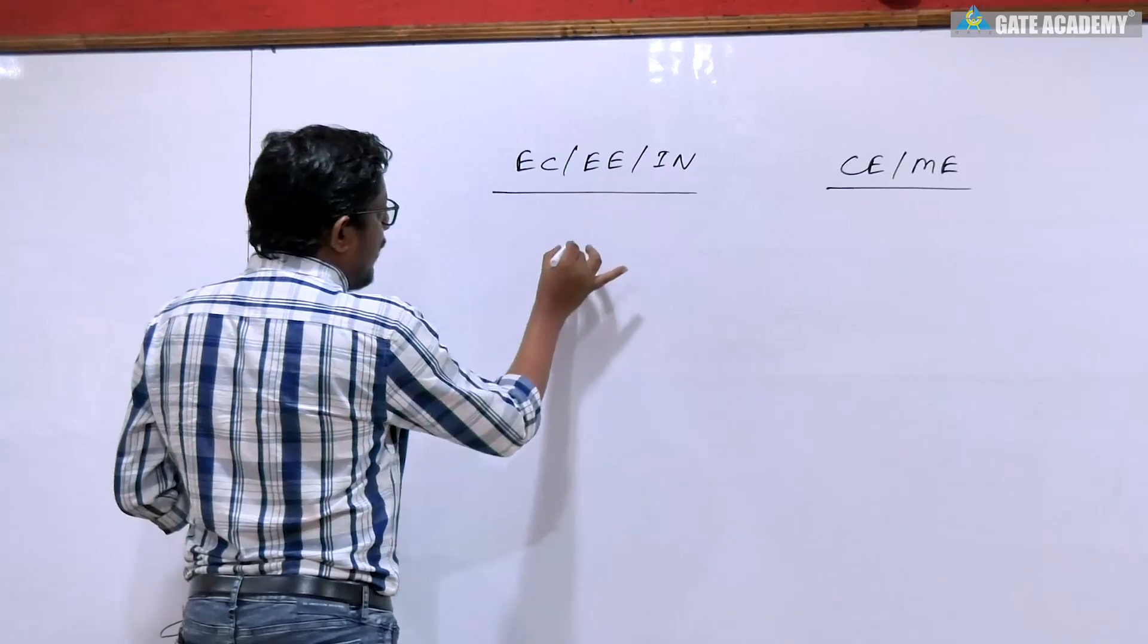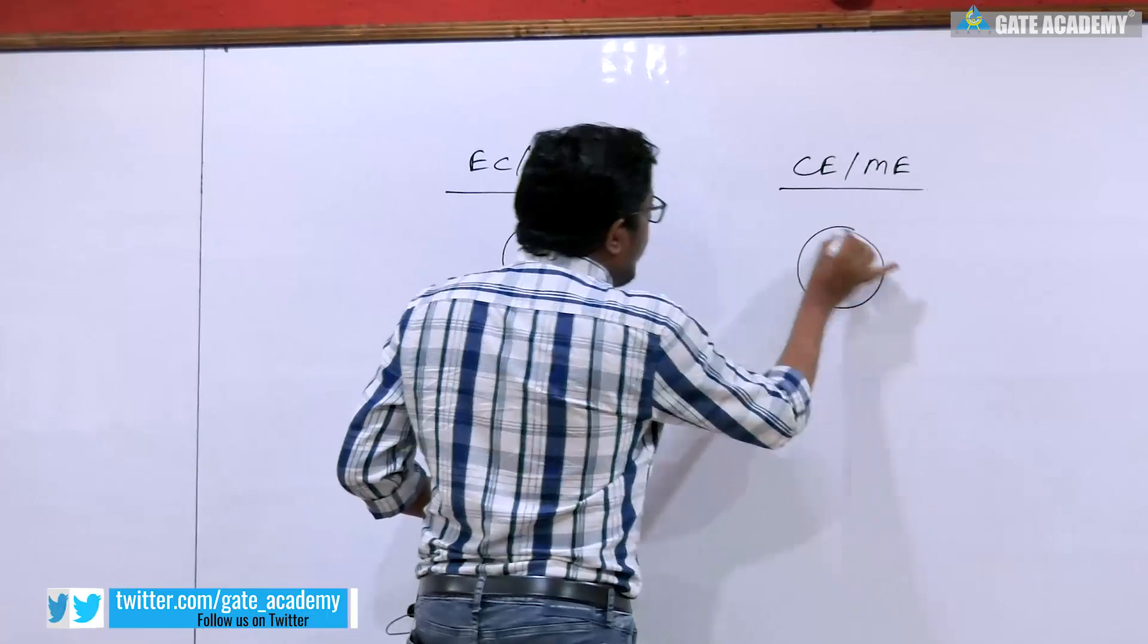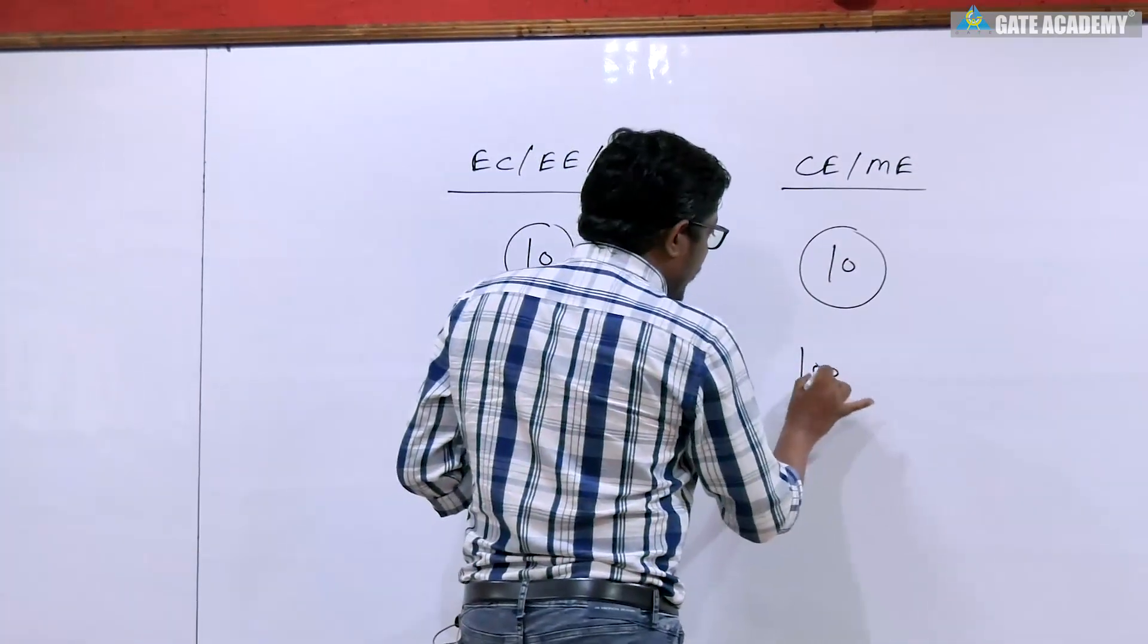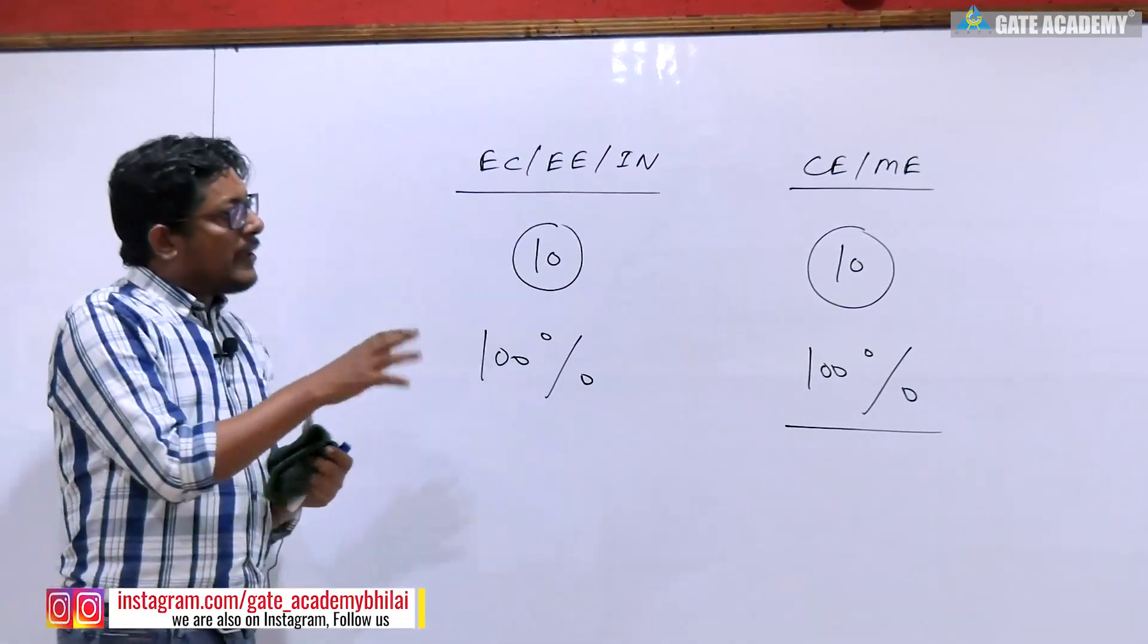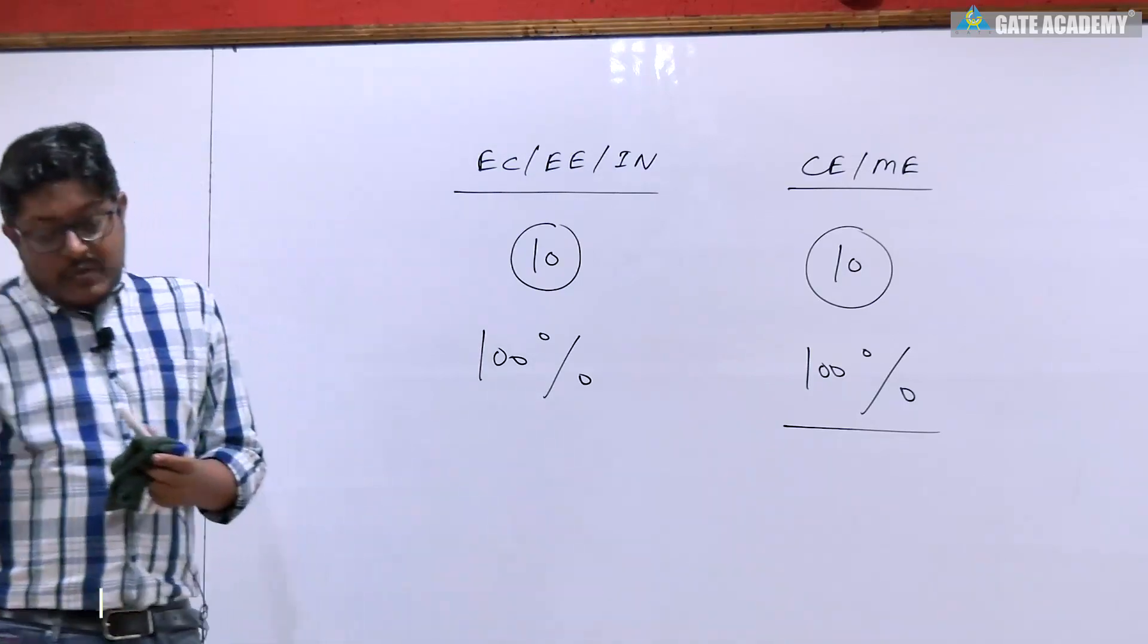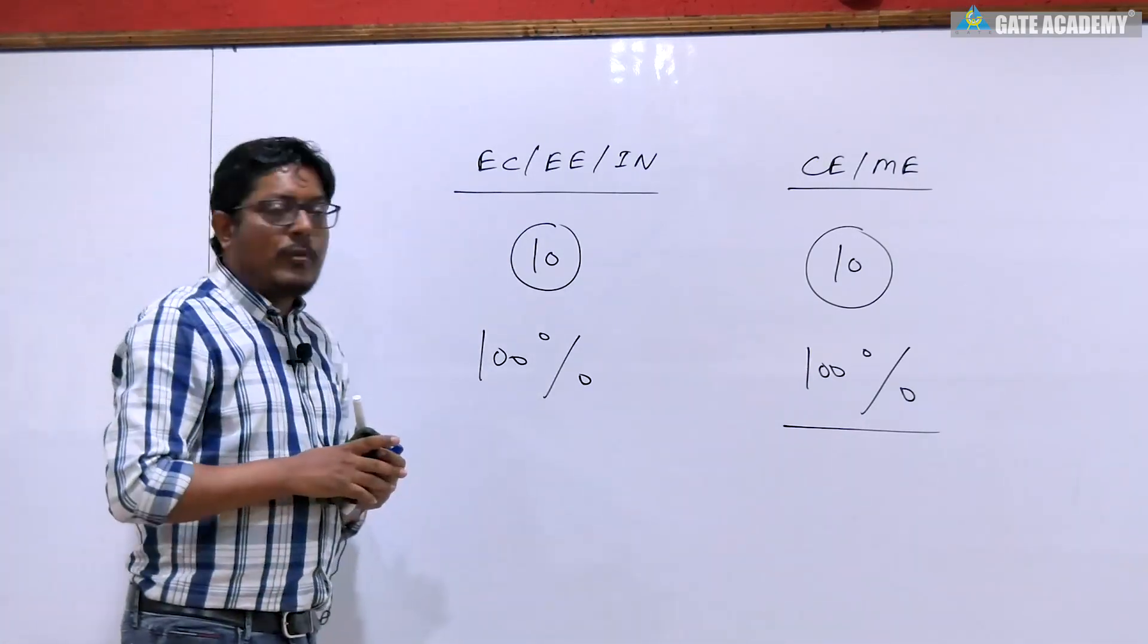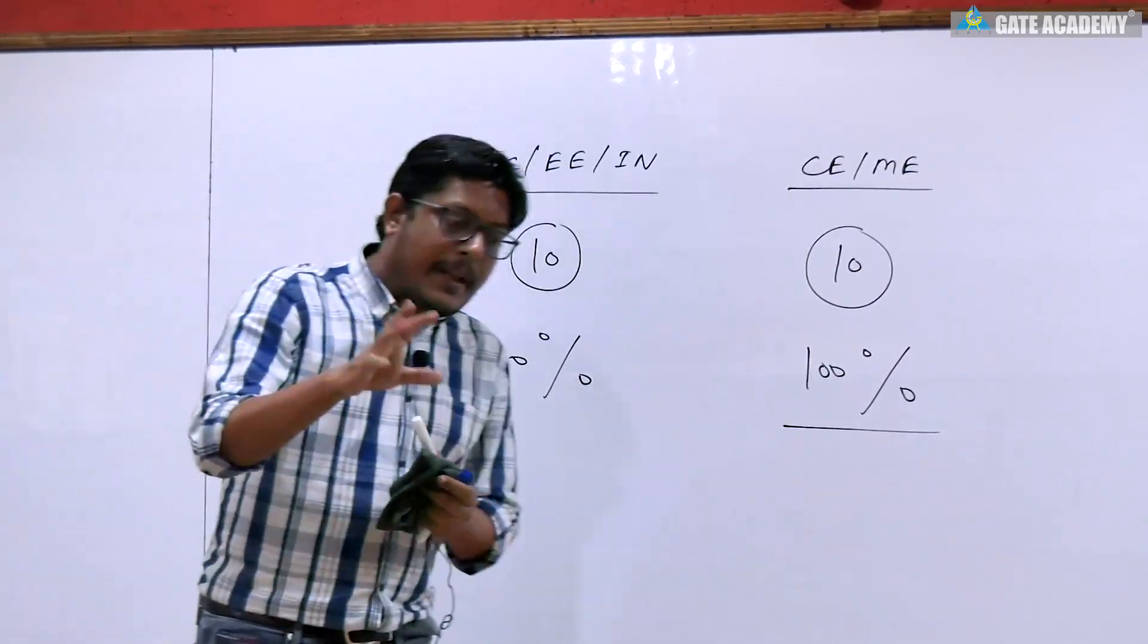10 people selected in each category. I was going to select top 10 people for 100% scholarship, but in those top 10 there was no one from civil mechanical. Then I decided we would separate civil mechanical so that civil mechanical people also have advantage. So 10 people selected in 100% scholarship. You will get a call from Gate for verification.